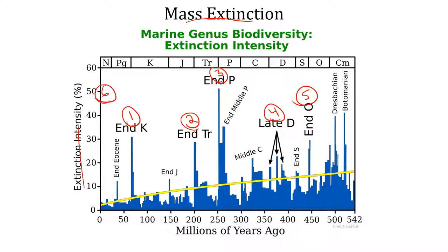They would argue that the impending sixth mass extinction is going to be wrought not from natural disasters but from human activity. There's an organization called the World Conservation Union — its French acronym is the IUCN — and they speculate that about 42 percent of amphibians, 26 percent of mammals, 13 percent of birds, and 40 percent of conifers are in danger of extinction.